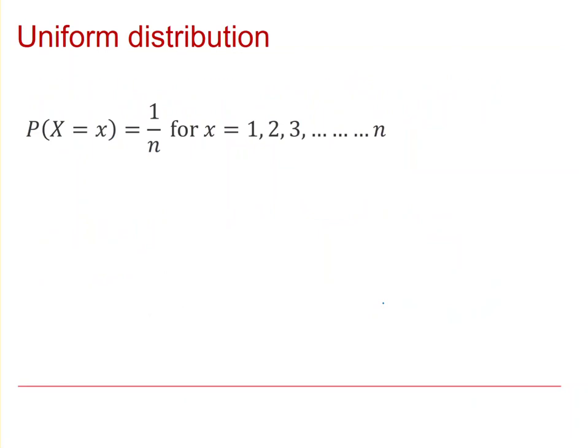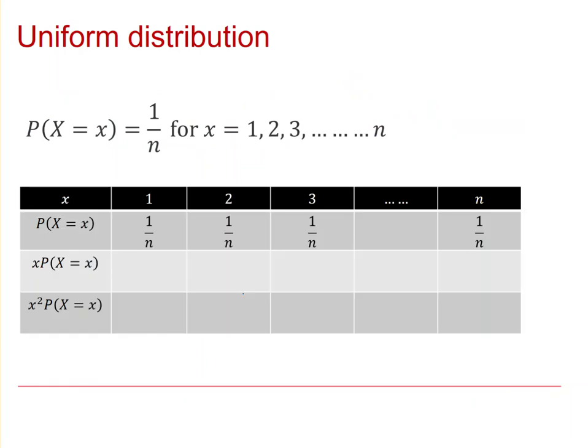This definition ensures that every possible outcome gets an equal share, one nth of the total probability of one. Using the formulae introduced in the last video, we're going to calculate the mean and variance for this general uniform distribution. As you can see, we have the same probability for every outcome, and that probability is one over n. To find the mean, we need to do x times its associated probability.